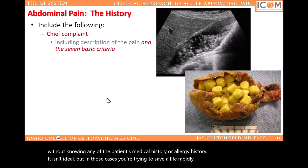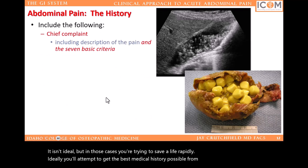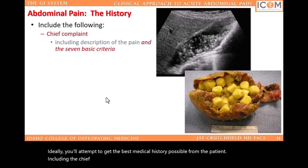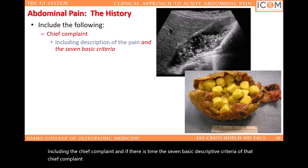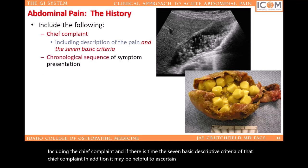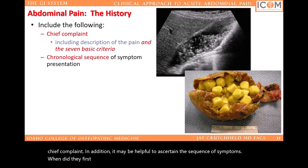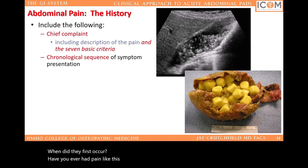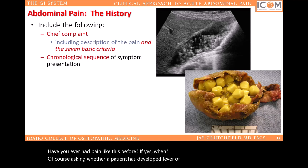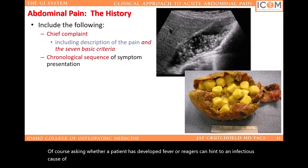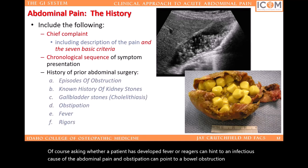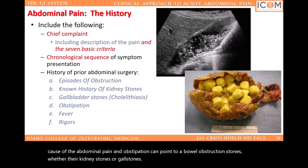Ideally, you'll attempt to get the best medical history possible from the patient, including the chief complaint, and if there is time, the seven basic descriptive criteria of that chief complaint. It may also be helpful to ascertain the sequence of symptoms — when did they first occur? Have you ever had pain like this before? Asking whether a patient has developed fever or rigors can hint at an infectious cause of the abdominal pain, and obstipation can point to a bowel obstruction. Stones — whether kidney stones or gallstones — can present other diagnostic challenges. Just because a patient has gallstones or kidney stones does not necessarily mean they need to be removed urgently. Many, if not most, are asymptomatic and found incidentally.